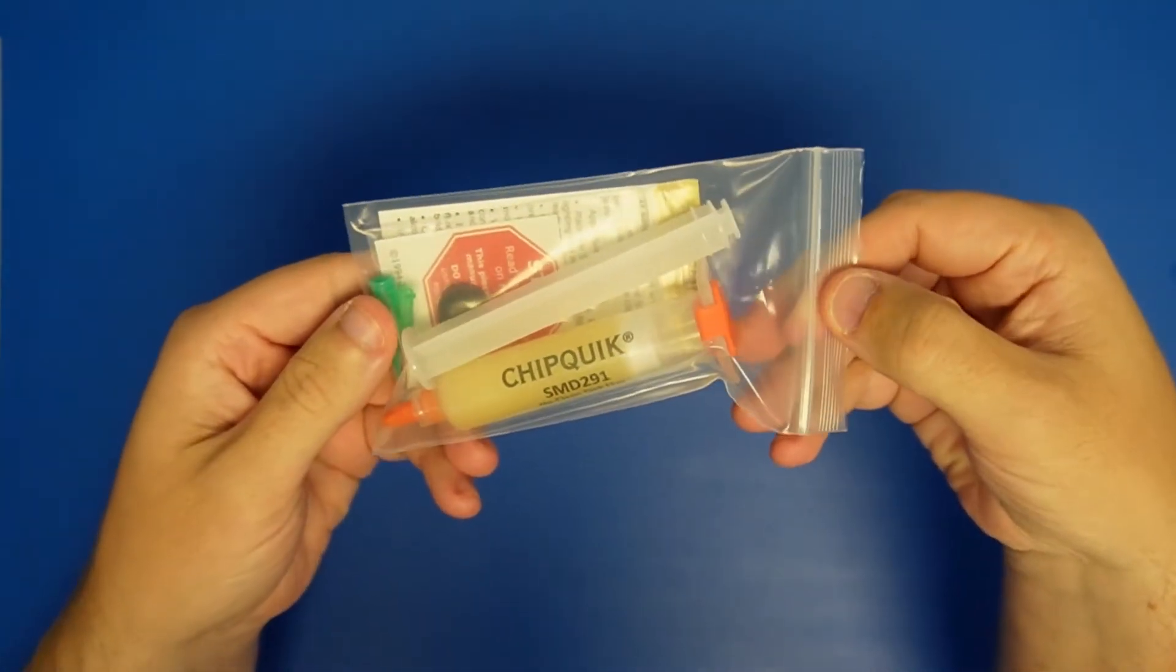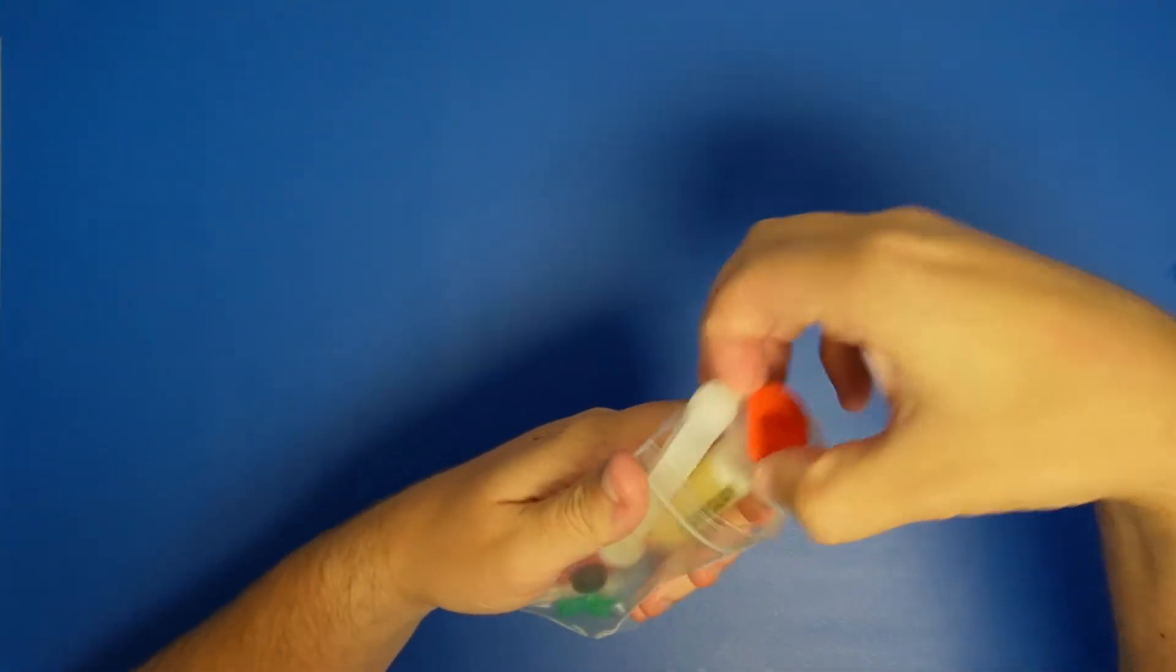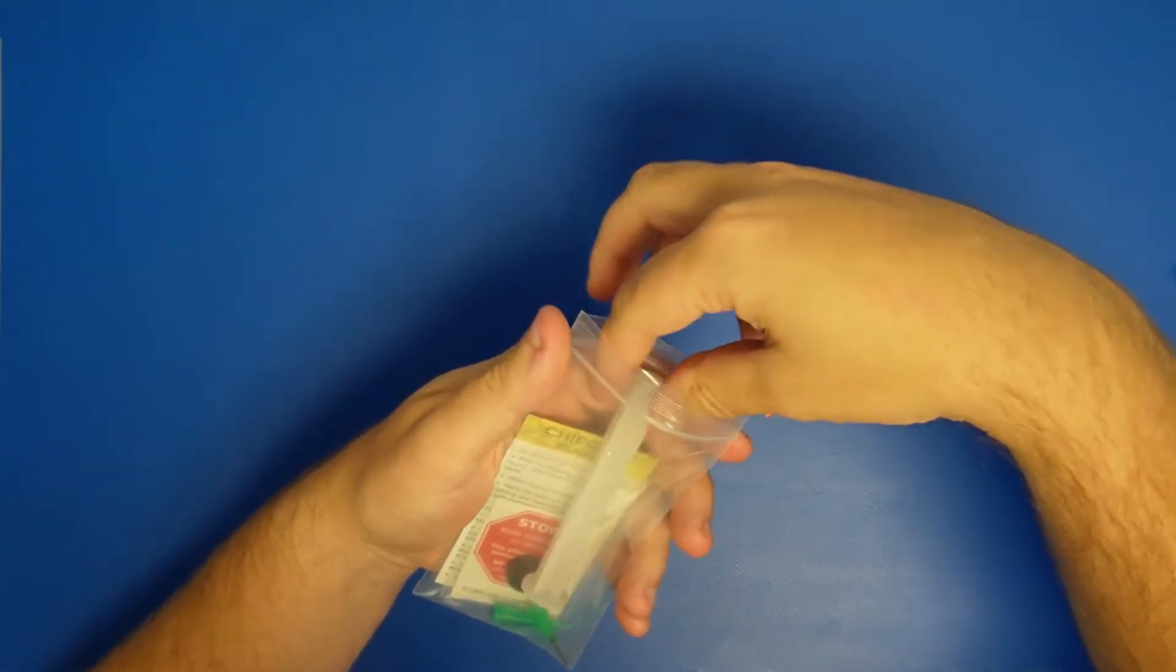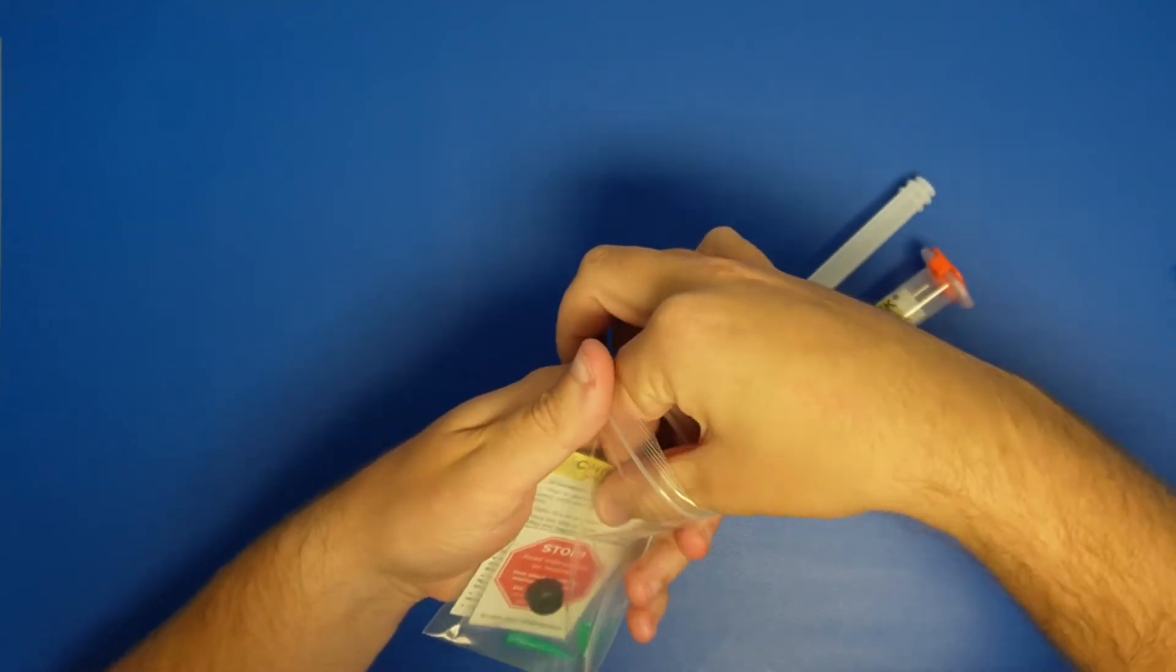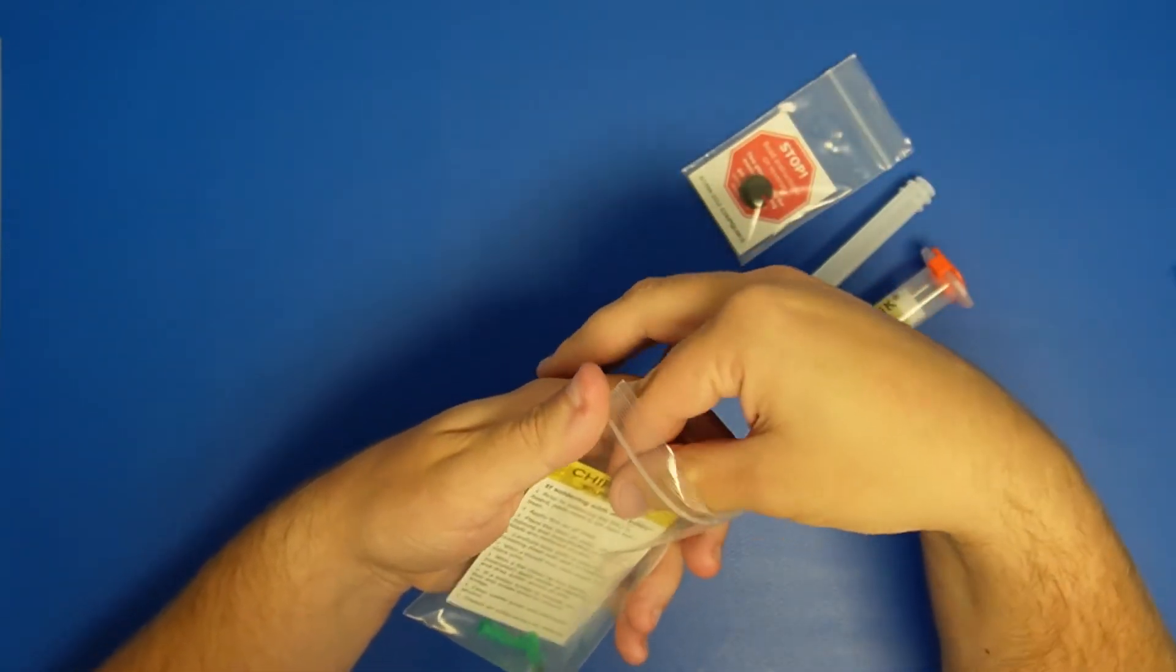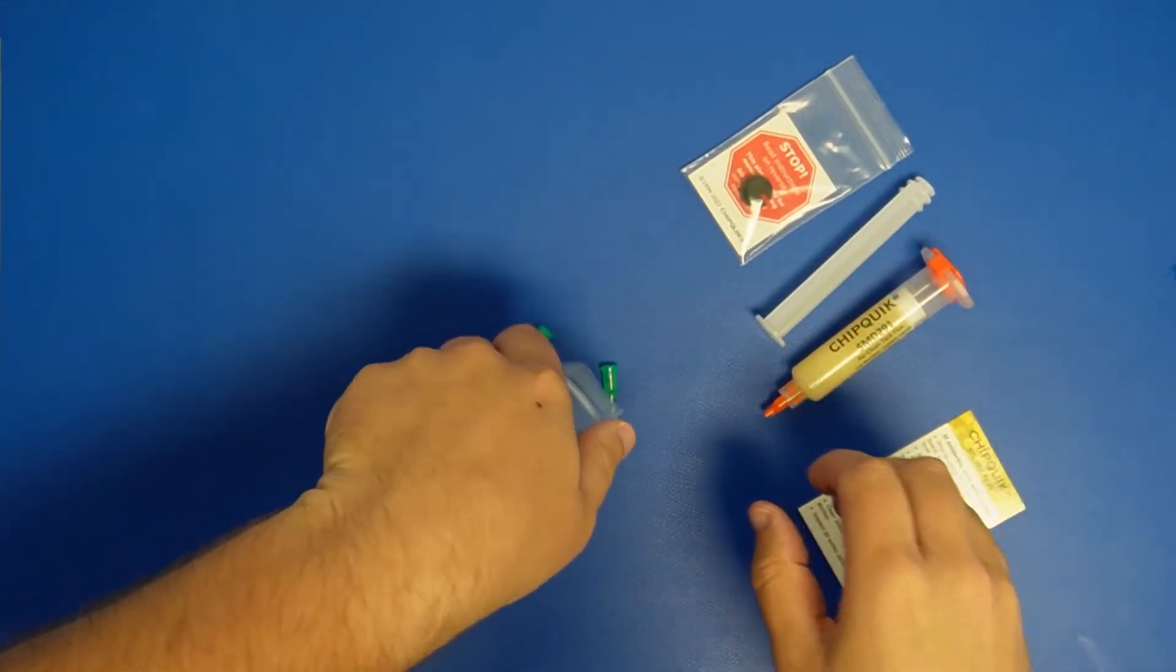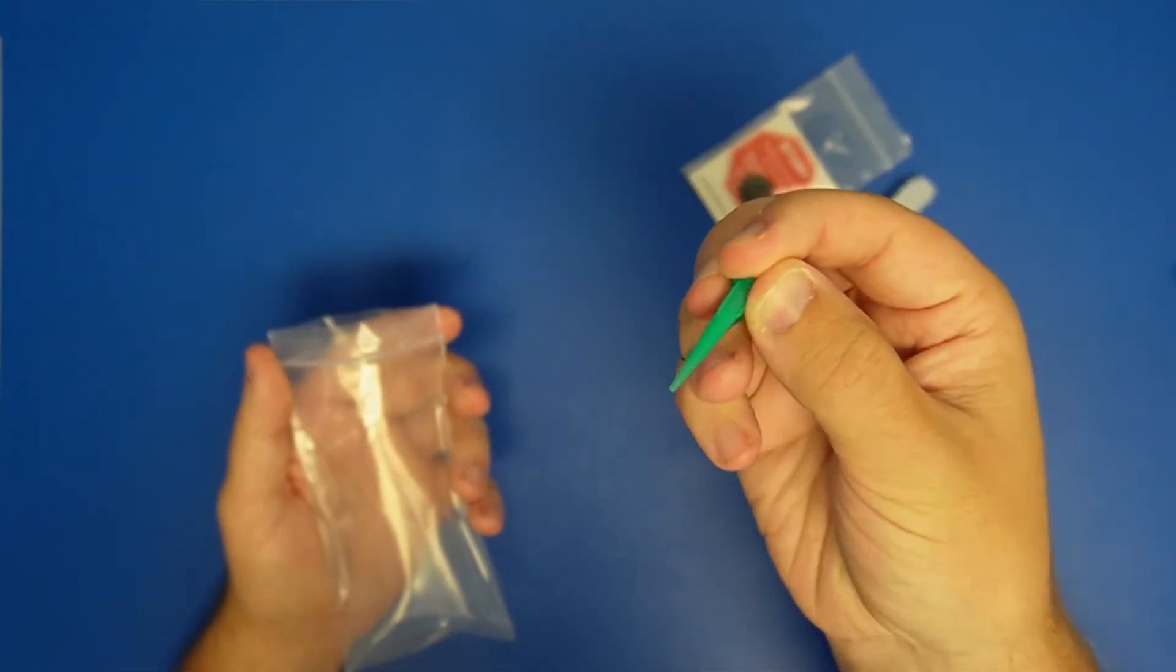This is the bag that it will be put in. You get the TAKFLUX syringe, the plunger, the stopper, the product card, and the two 16 gauge conical needles.